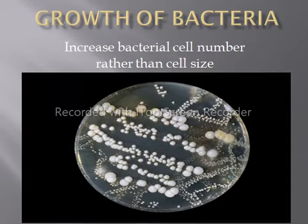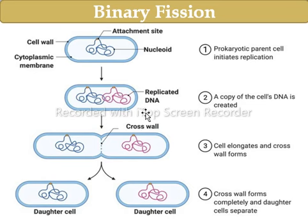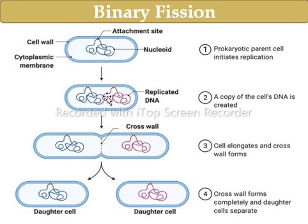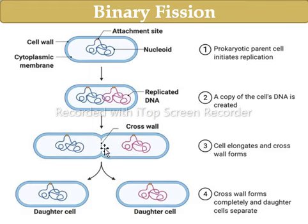Let's discuss the binary fission process. Here we have a prokaryotic cell or bacterial cell with its circular DNA. The bacterial DNA will replicate, meaning a copy of the cell DNA is created. Then the bacterial cell will elongate and a groove will arise in the bacterial cell wall, and the DNA will divide it into two. This mid portion is called the cross wall or transverse septum.